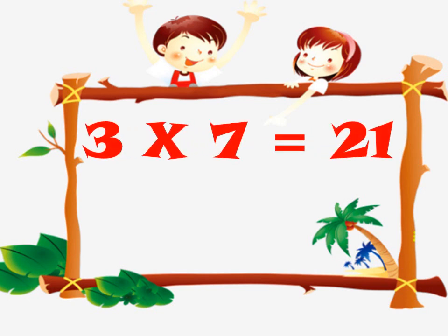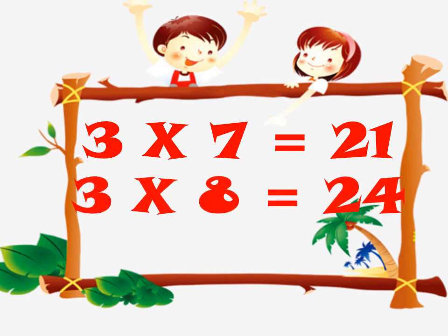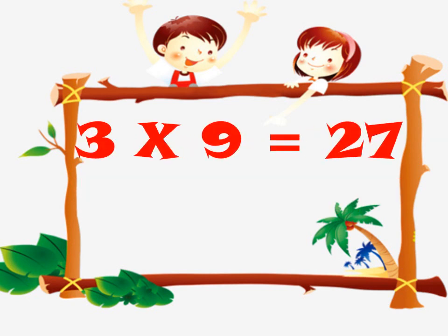3-7 is a 21. 3-7 is a 21. 3-8 is a 24. 3-8 is a 24.